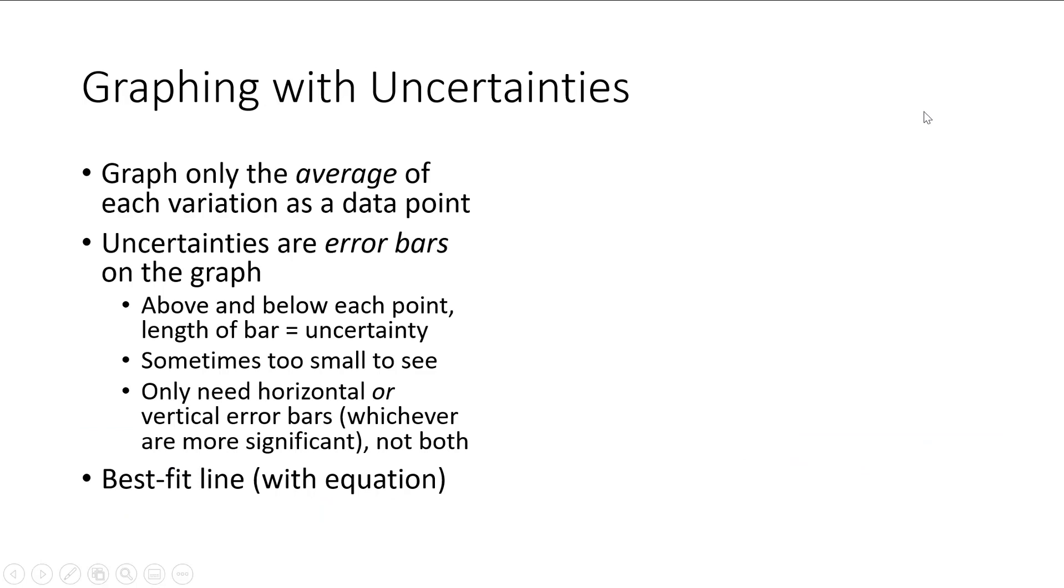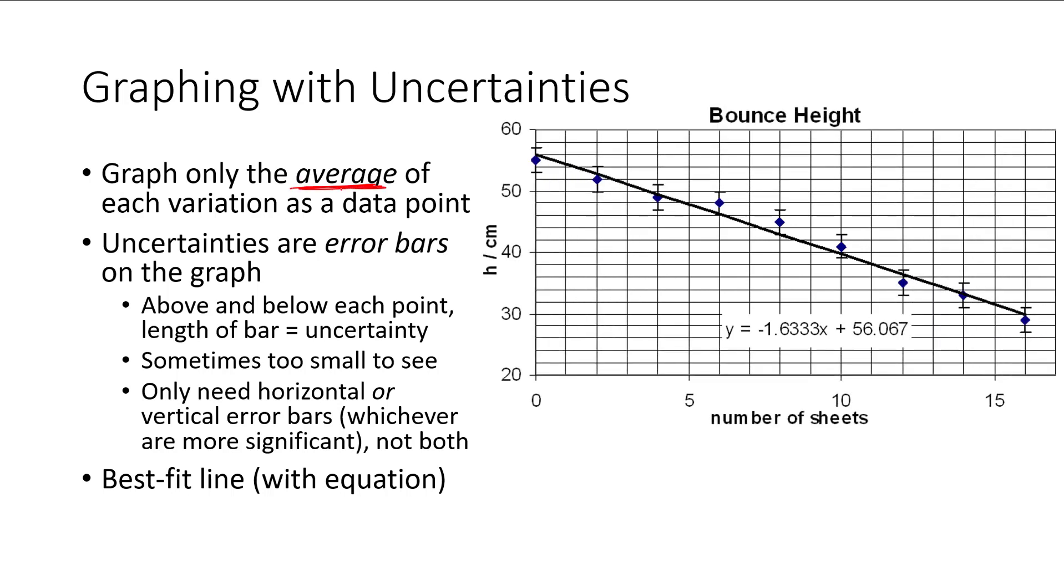But we also want to incorporate these uncertainties into our graphs. Whenever we have data like this, we're going to create a scatter plot, but we only graph the average value. We don't graph each individual trial. And so we create a scatter plot with the average value, that way we don't have all these extra points here. The dots show us the overall trend. And we graph the uncertainties as error bars on the graph. Those are these little bars that are showing up on the graph. So the length of the error bar is equal to the uncertainty. The error bar will be drawn both above and below each data point. Sometimes the uncertainties are too small to see or too small to draw. If that's the case, you just need to make a note that the uncertainties for this variable are too small to see or draw.